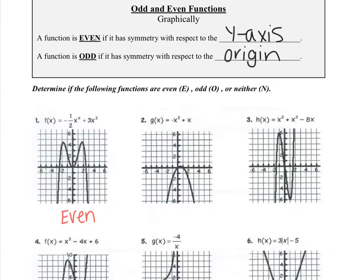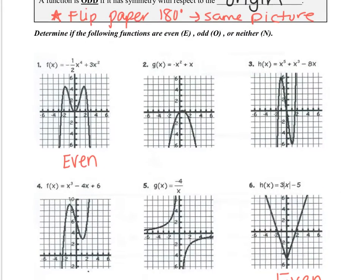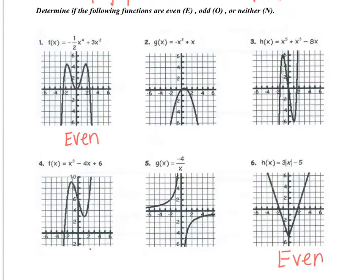Now let's go back to see all about odd functions. We know a function is odd if it has symmetry with respect to the origin. This is going to be a little bit difficult to explain using this tablet, but here's how to check for odd functions: you're going to flip the paper 180 degrees — in other words, upside down — and see if you get the same picture. Take your piece of paper, flip it upside down, and see if you get the same exact picture. If you get the same exact picture, it's odd. If you don't, then it's neither, because we already tested for even. Take a minute and try that, then hit resume for the answer.